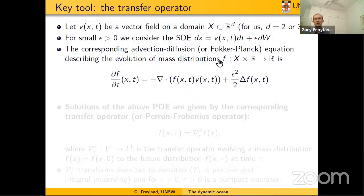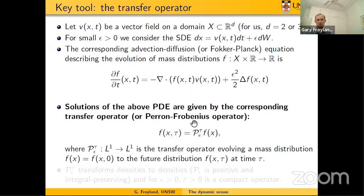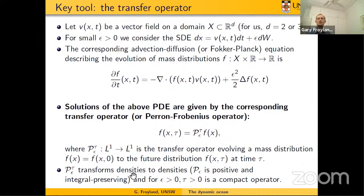This SDE, if we think about its action on mass distributions or densities, has evolution governed by the advection-diffusion or Fokker-Planck equation. If you have a mass distribution F and ask how that density changes in time, you have a change due to advection and a change due to the small diffusion. Solutions of this PDE are given by applying a linear operator to that initial distribution F. This linear operator is a Perron-Frobenius operator, or more generally a transfer operator. This operator, indexed by epsilon (the diffusion strength) and tau (the flow time), transforms densities to densities. It's a positive operator, an integral-preserving operator, and if epsilon and tau are positive, it's a compact operator on L^p.